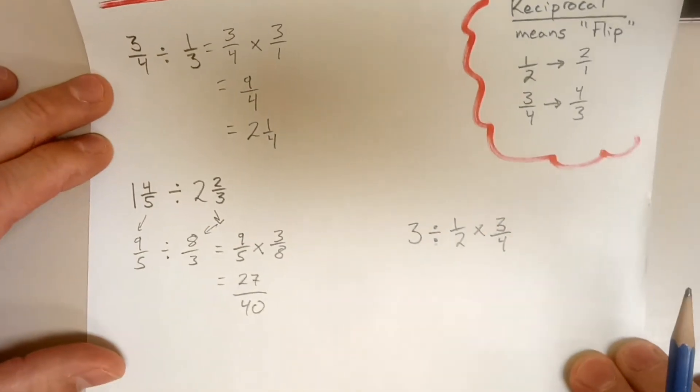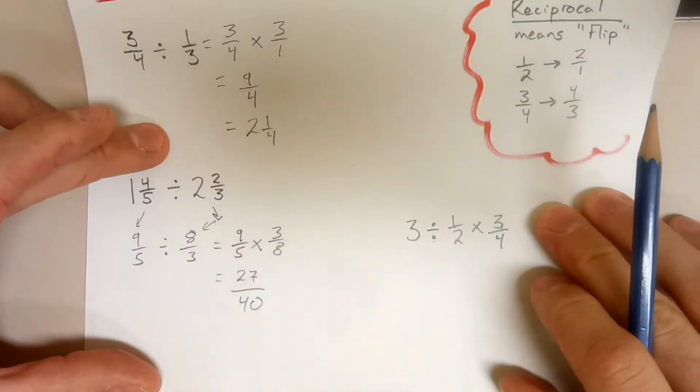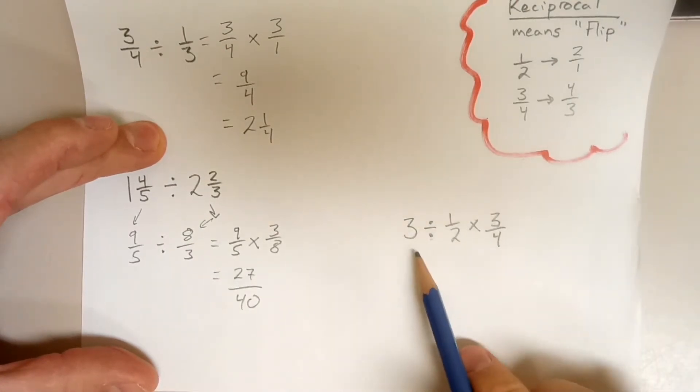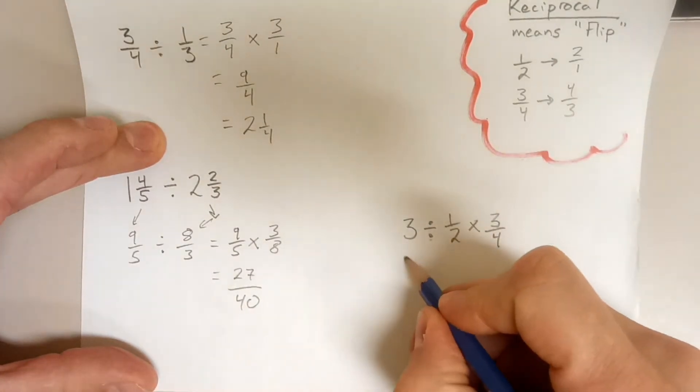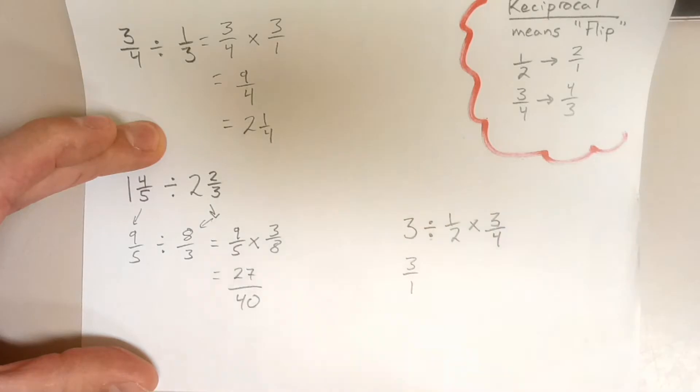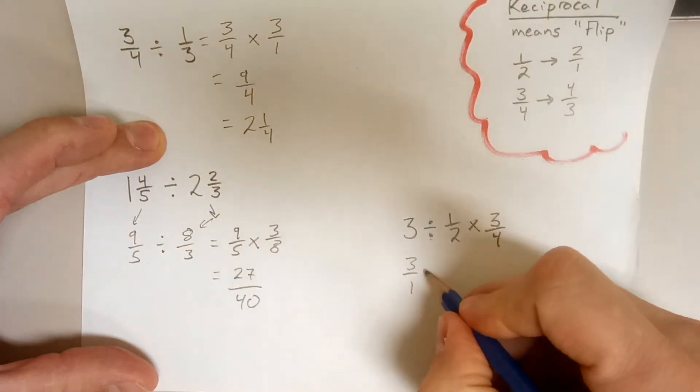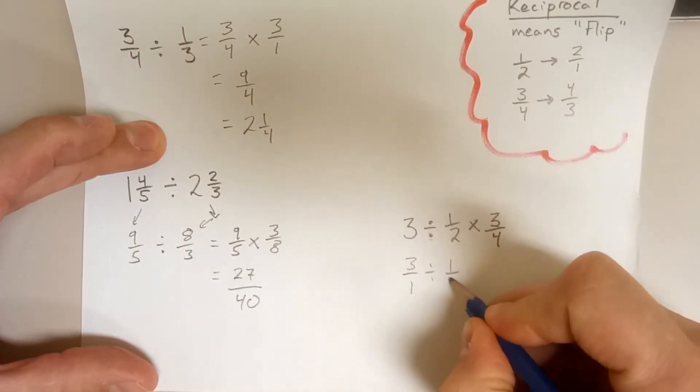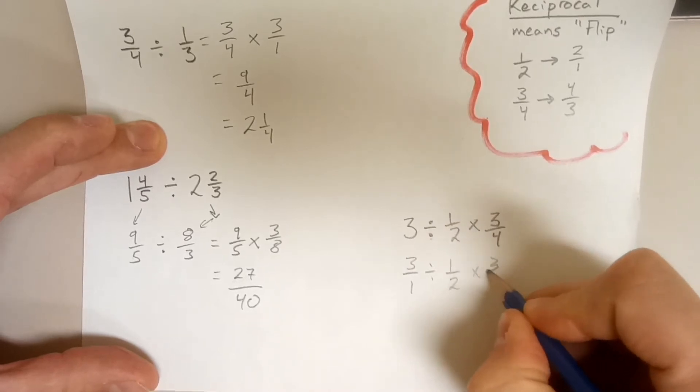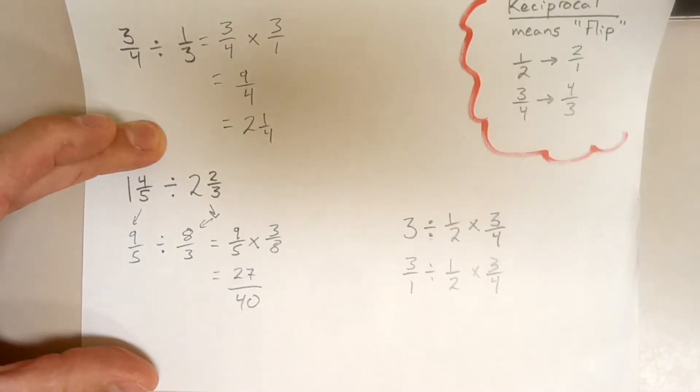And now our last example here, we have three terms in a row. So this guy is a whole number, I'm going to switch that right away before we do anything else, to a number over 1. Copy the rest down. Okay, so here I have a division and a multiplication.